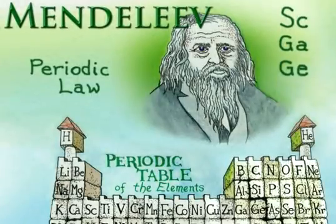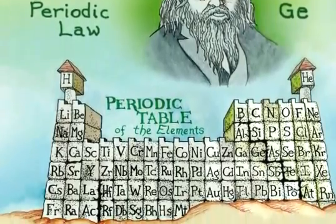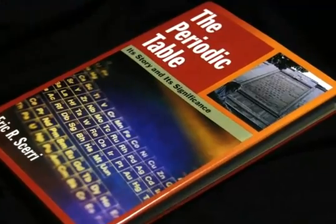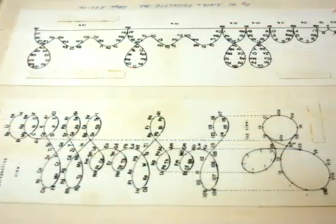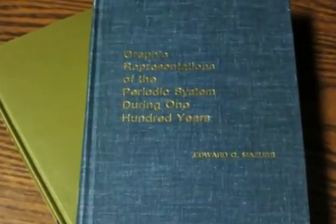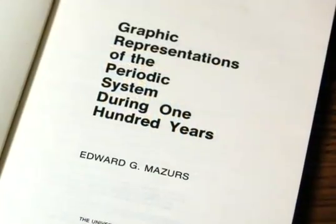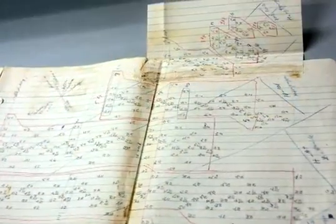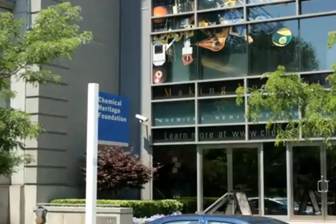But it was Dmitry Mendeleev who gets most of the credit for the invention of the Periodic Table. To learn this story of Mendeleev and his successors, we interviewed Dr. Eric Sherry of UCLA, author of The Periodic Table: Its Story and Its Significance, by Oxford University Press. Throughout this episode, we will also use the diagrams and notes of Edward G. Mazurs, who wrote a definitive book in 1957 and 1974 about ways of classifying periodic tables, titled Graphic Representations of the Periodic System During 100 Years. These notes are archived at the Chemical Heritage Foundation in Philadelphia, Pennsylvania.